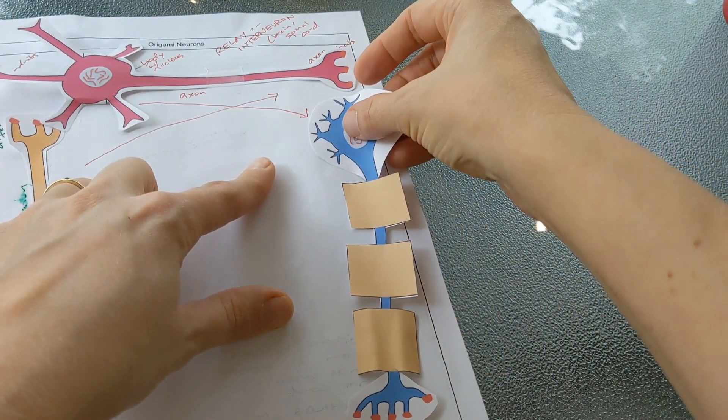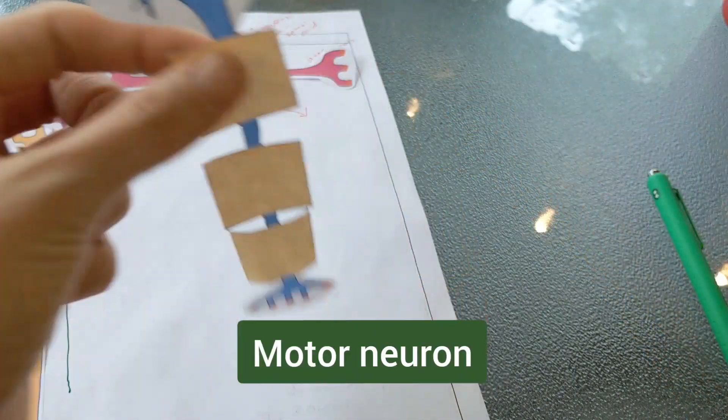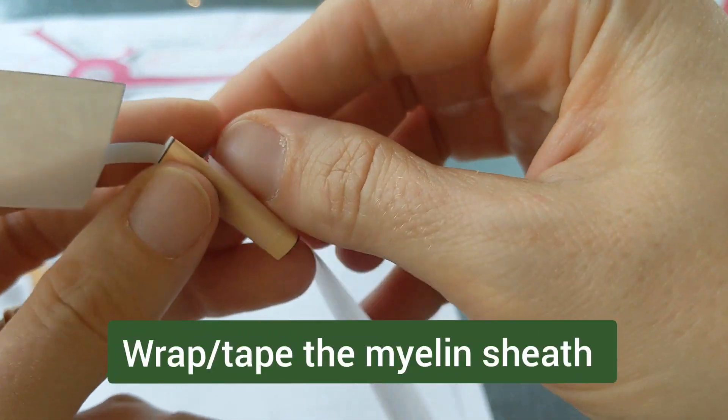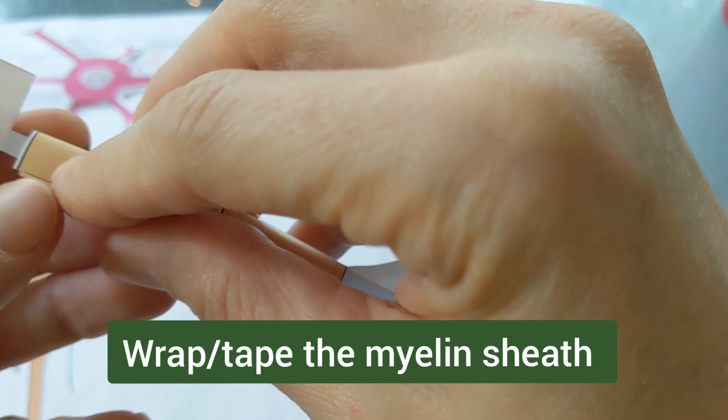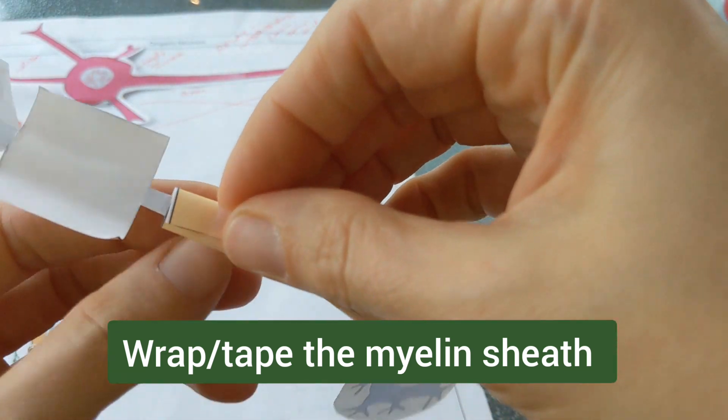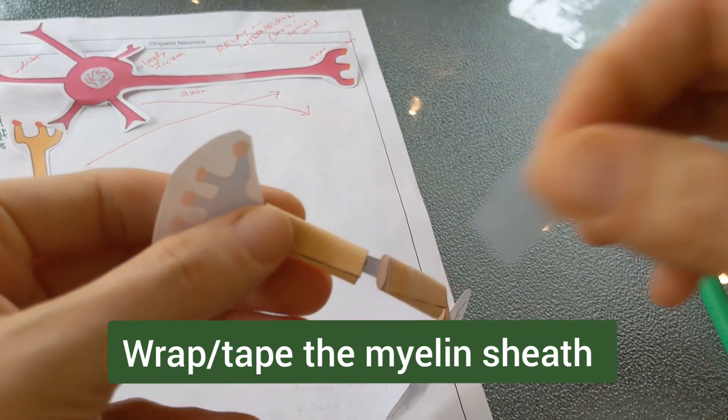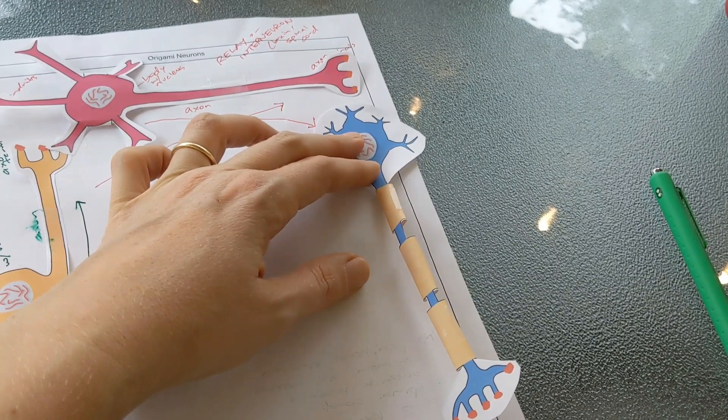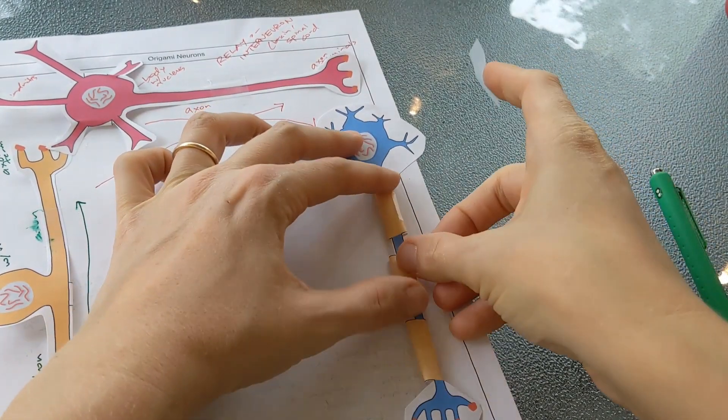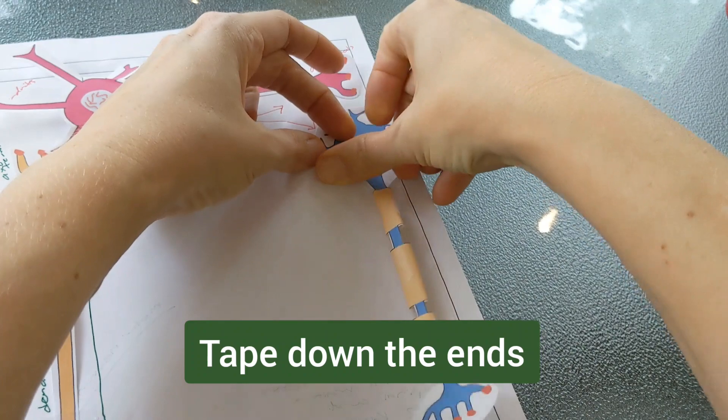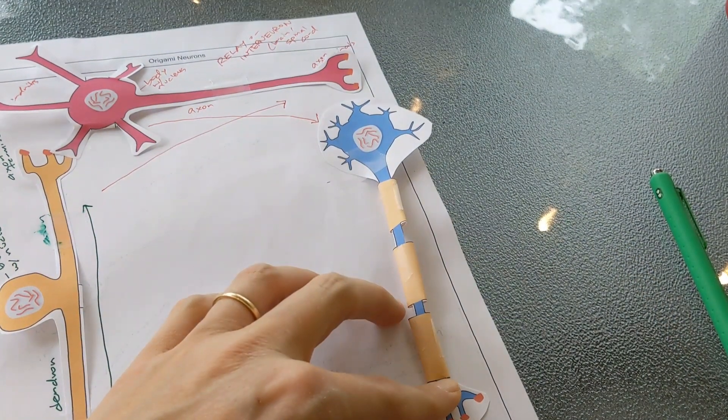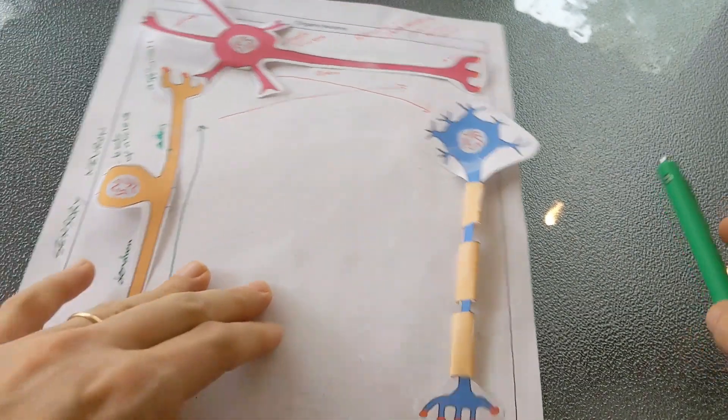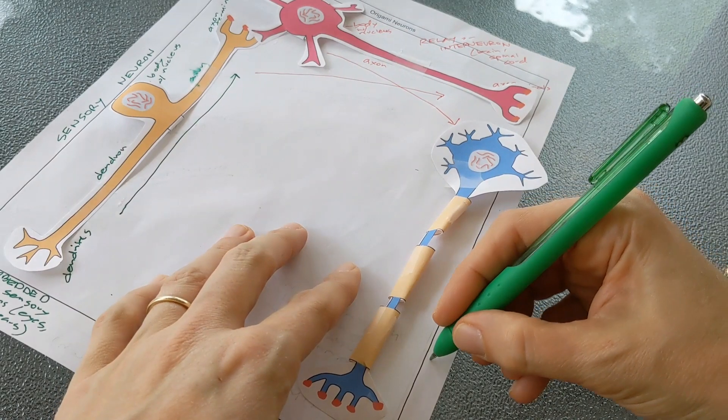So now we have the final kind of neuron which is a motor neuron. I went ahead and taped where the myelin sheath is and I'm going to tape down my motor neuron on each end. Again, this kind of neuron is part of the peripheral nervous system so I'm going to go back to my green color. And this is called a motor neuron.